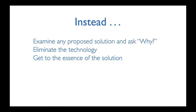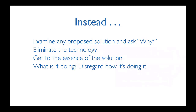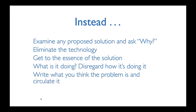The essence is: what would this be doing if I had no technology? If I peel away the computers, the people, the organization — I'm left with the pure policy or essence of the problem. Ask what it's doing, not how it's doing it. A practical suggestion: write down what you think the problem is and circulate it. Give it to everyone in the project, managers included, and ask 'Is this the problem we're solving with the proposed solution?' People will quickly tell you if you've got it wrong.